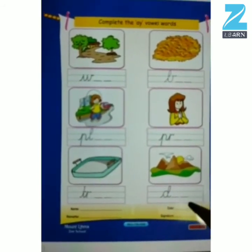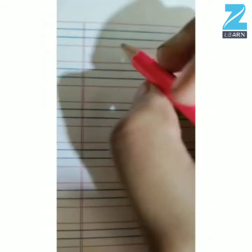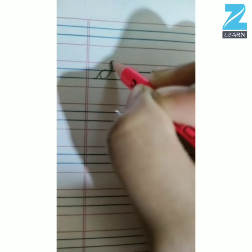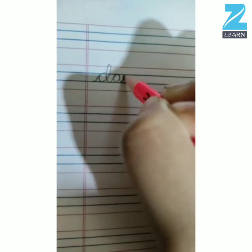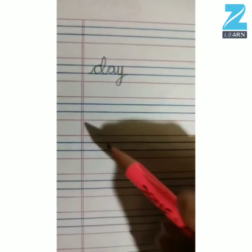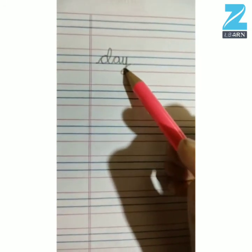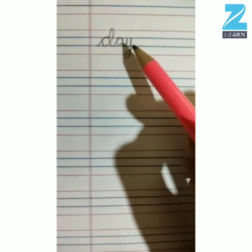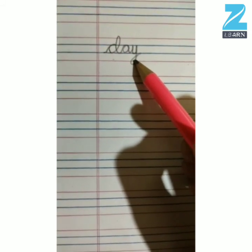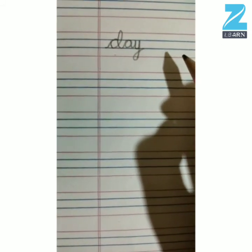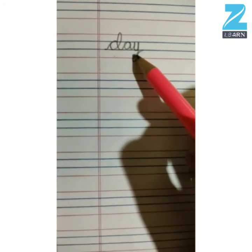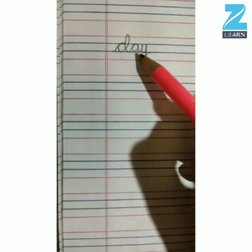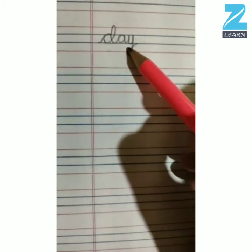Now kids, we will trace the word day. Kids, first you have to write D, A, Y — day. Like this, you have to complete the A vowel word.